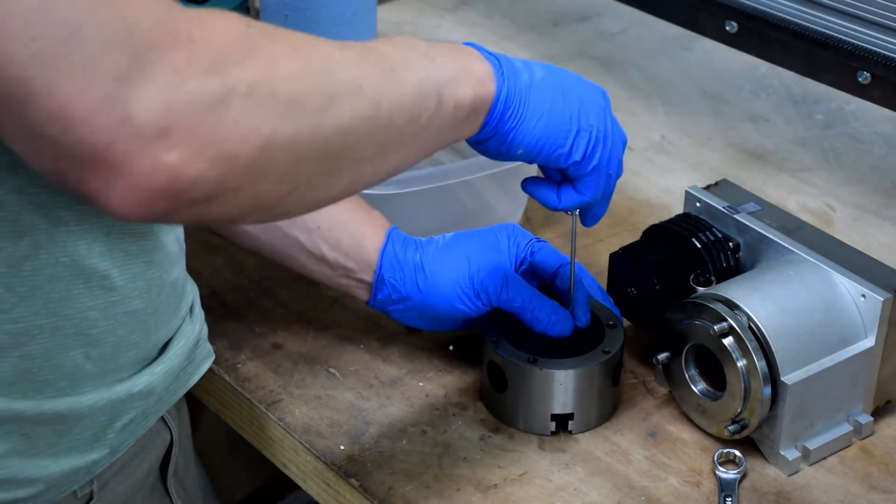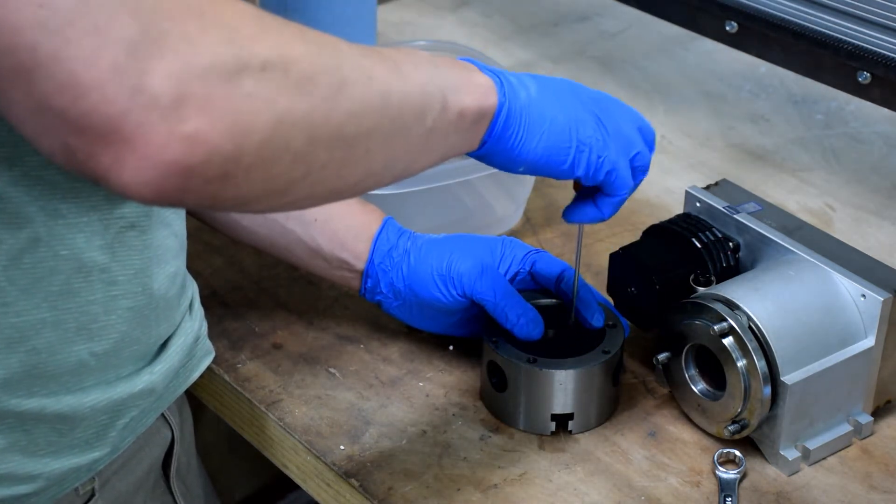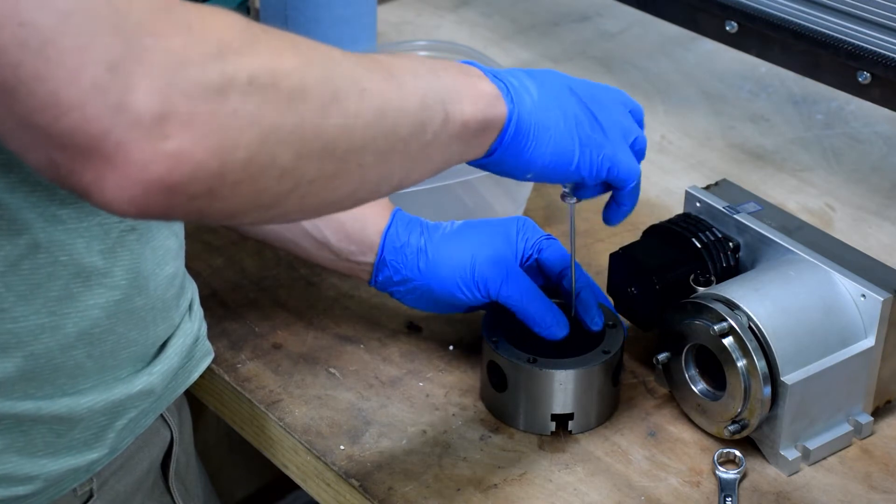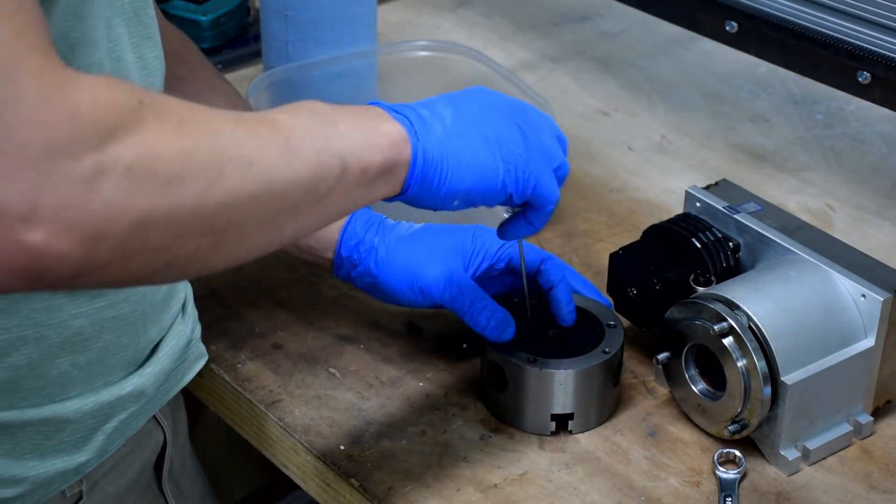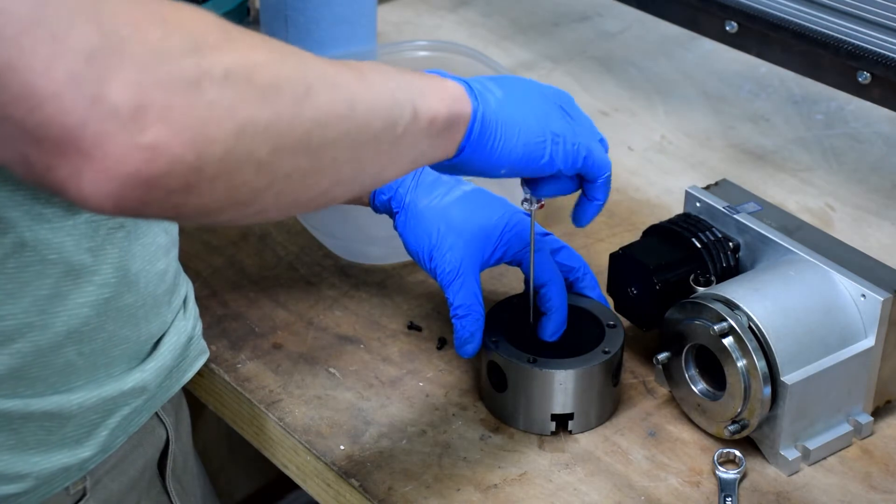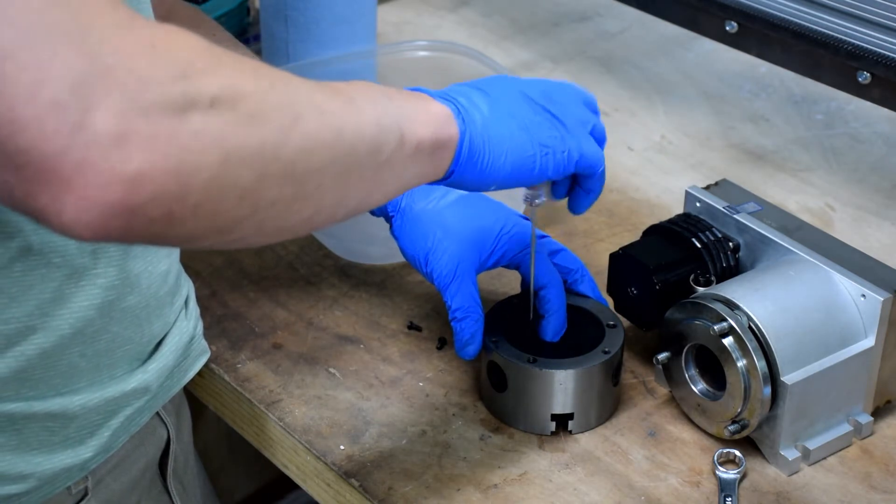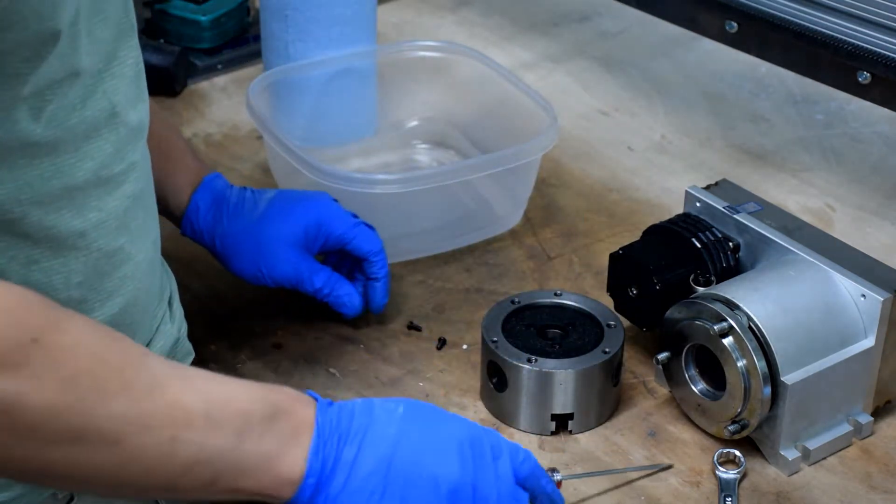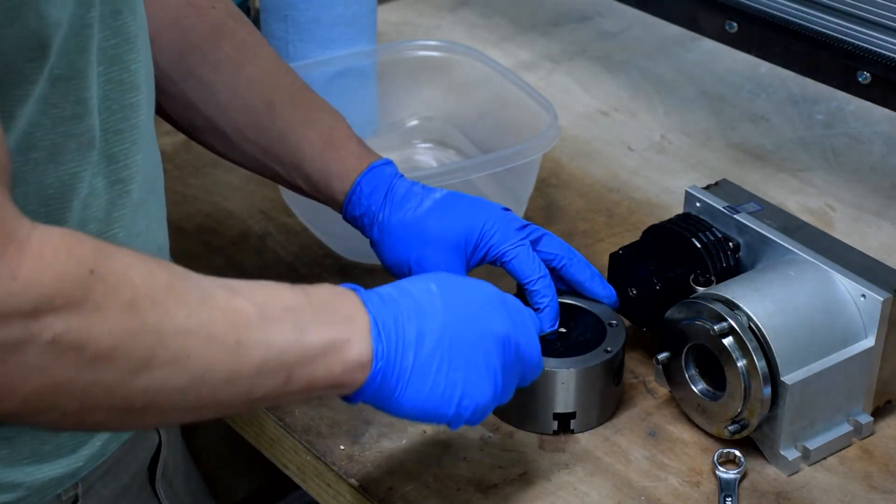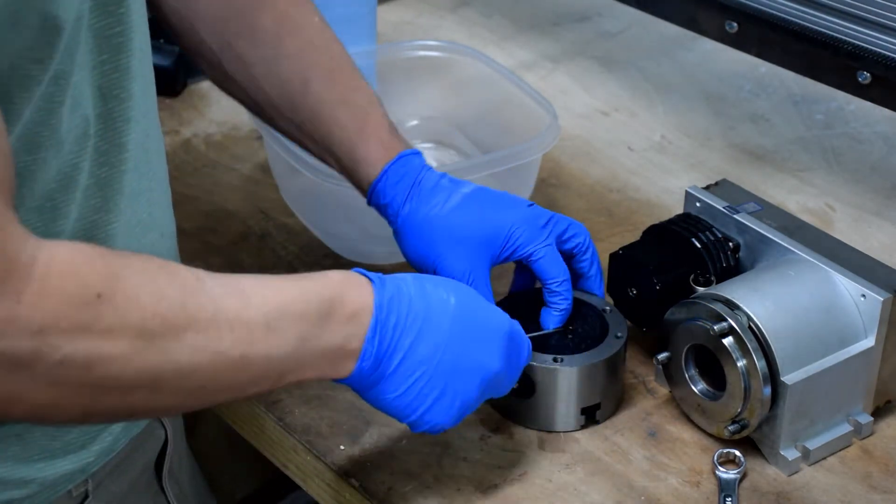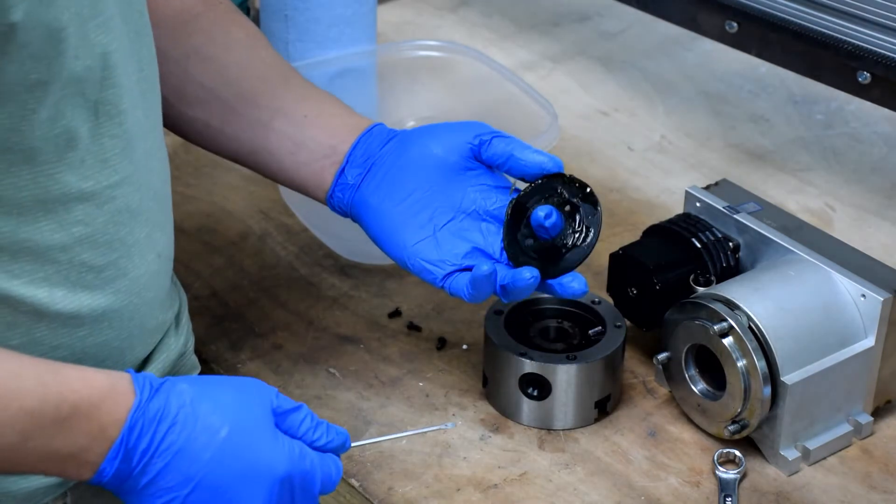The stock bore on these chucks is 20mm. I took these to a machinist and had them bored out to 30mm. It's really handy to have them do that. It probably only cost $100 or so. So just undo those screws and pull this thing off.